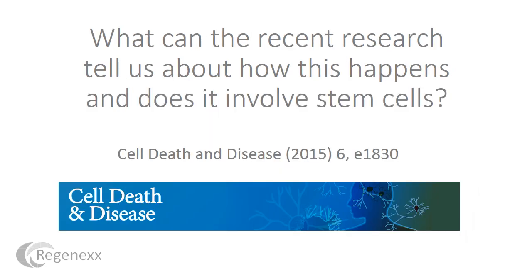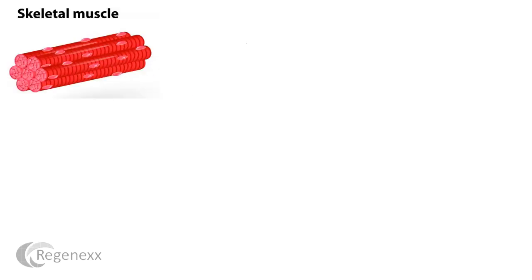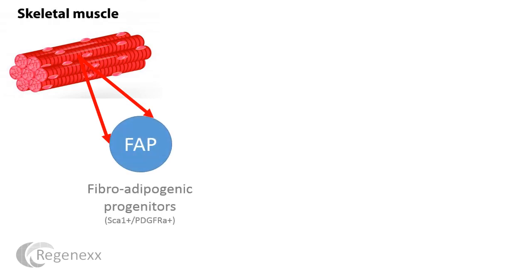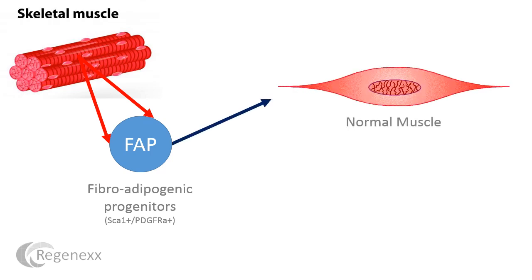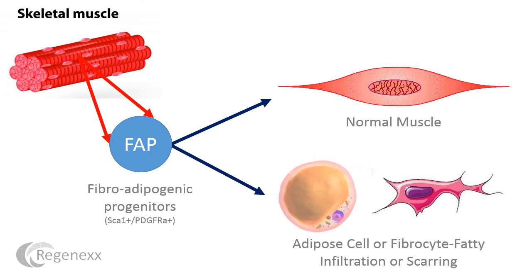There's some recent research that can tell us about how this happens at a cellular level involving stem cells. Within your muscles, you have these fibroadipogenic progenitors — they're kind of like mini stem cells — and they have a switch on them. If the switch is turned one way, those cells become normal muscle. But if the switch is turned the other way, those cells can turn into fat or scar tissue.